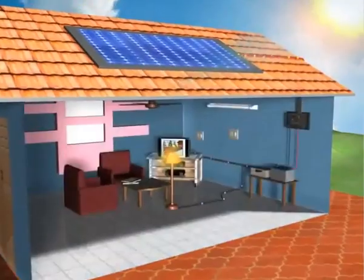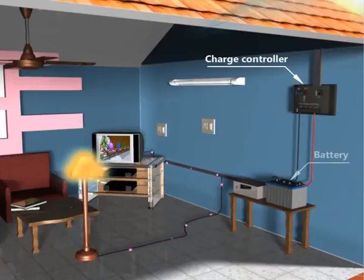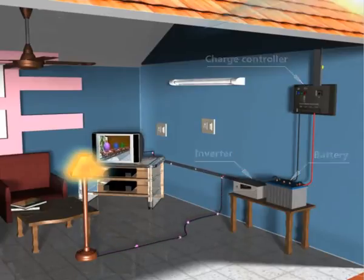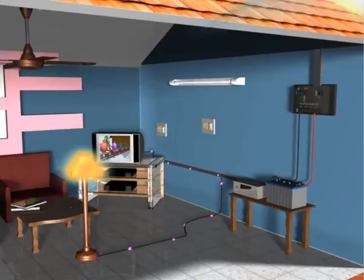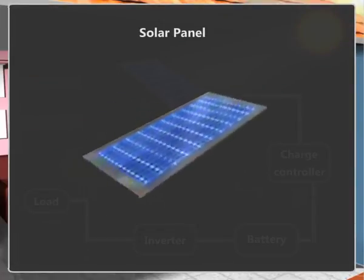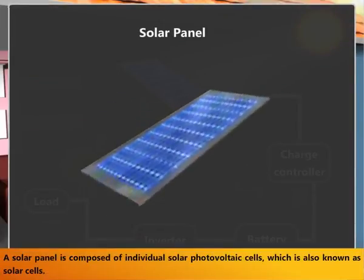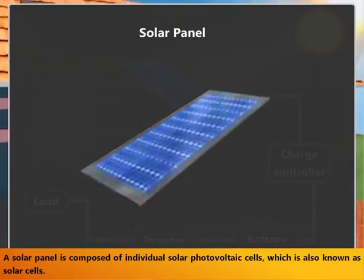The photovoltaic system typically includes a charge controller, battery, inverter, and AC load. A solar panel is composed of individual solar photovoltaic cells, which are also known as solar cells.